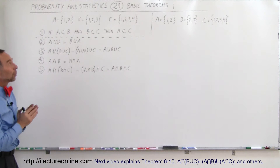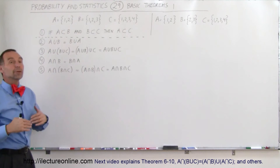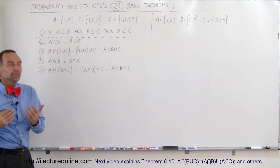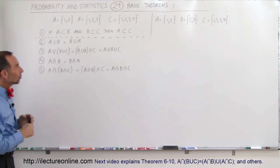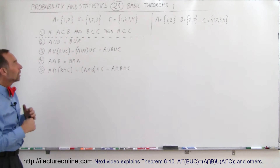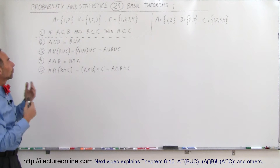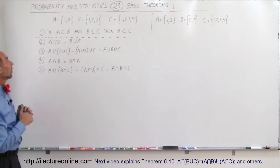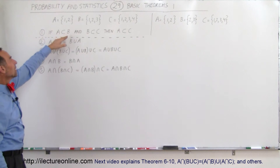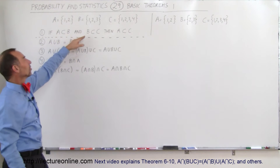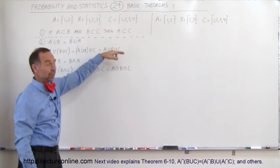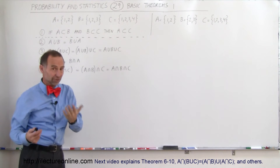Welcome to ElectronLine. We're going to take a look at some of the basic theorems. There's a whole bunch of them, so we'll snip them up into groups. The first theorem is this: if A is a subset of B and B is a subset of C, then A must be a subset of C.